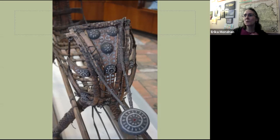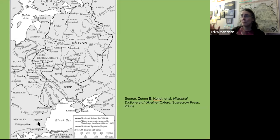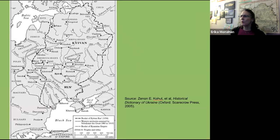So that's a few words about Slavs living in this region, sometimes referred to as the Pontic Steppe. This map from Zenon Kahoot's book shows Kievan Rus — the Baltic Sea, all these river systems. No one river goes all the way through, but portages connected river systems all the way down to the Black Sea, and just across the Black Sea was Constantinople, one of the richest, most vibrant cities.